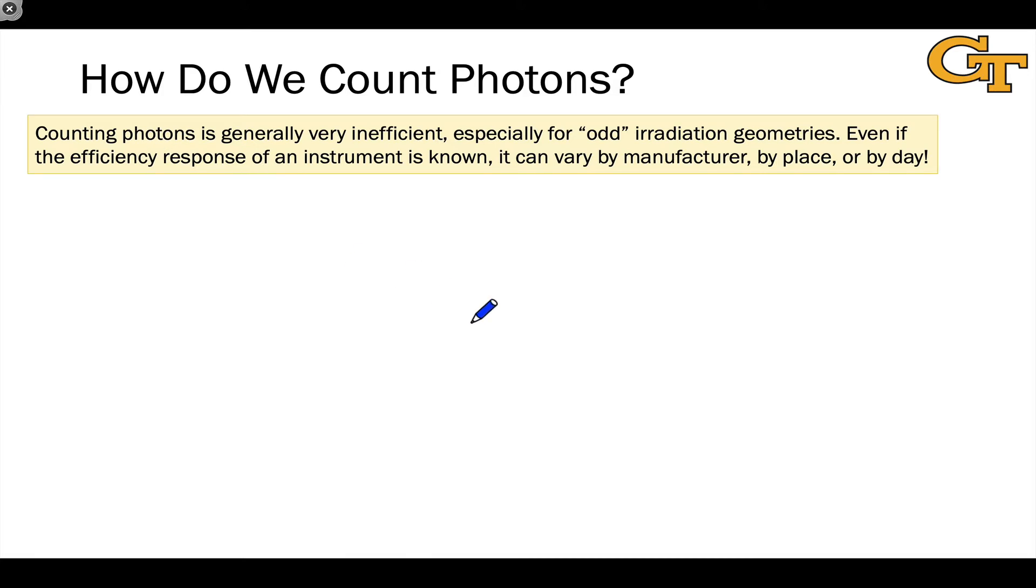Even if we're using an instrument to measure photons, to count photons, the efficiency response of that instrument can vary by the manufacturer, by the place the instrument was manufactured, or even by the day. It tends to change over time. Naively, if we were to ask how can we count photons, we would probably start with some kind of physical device.